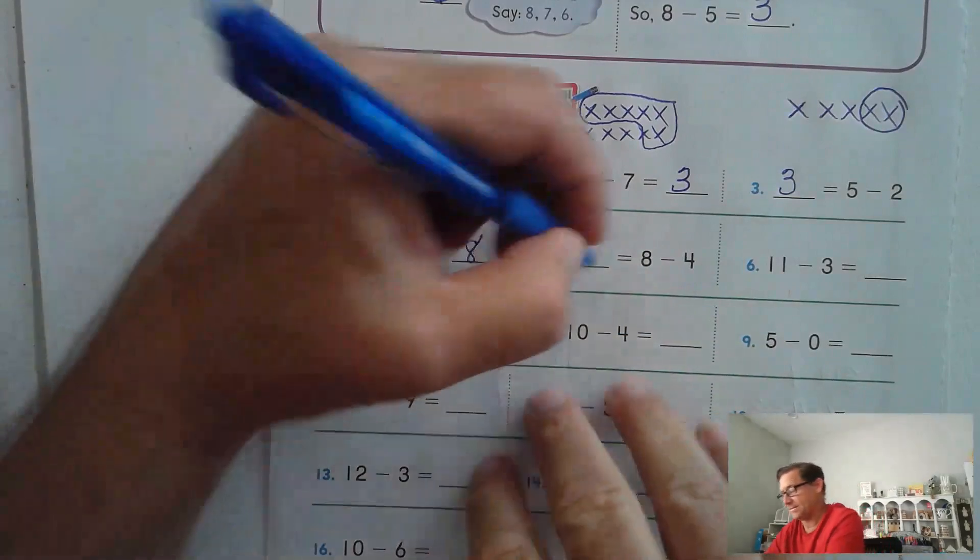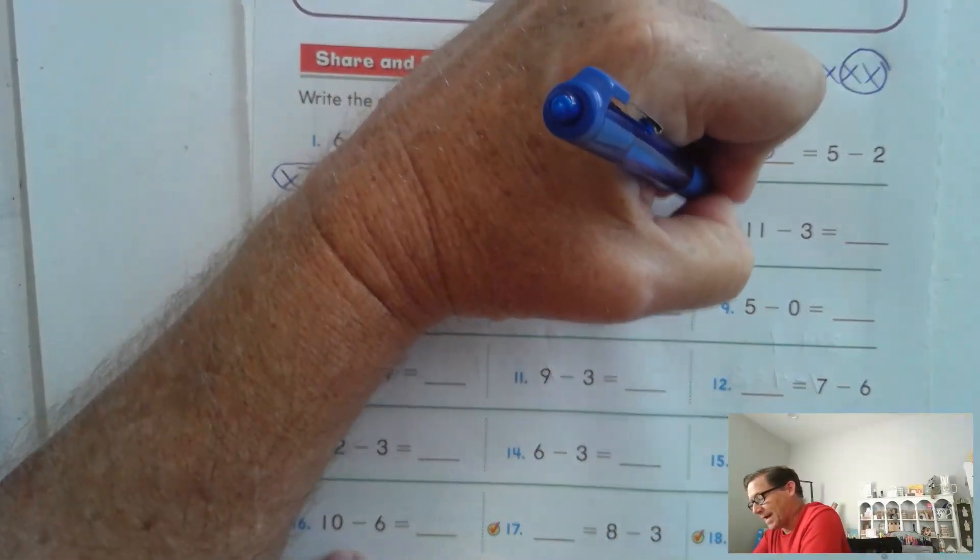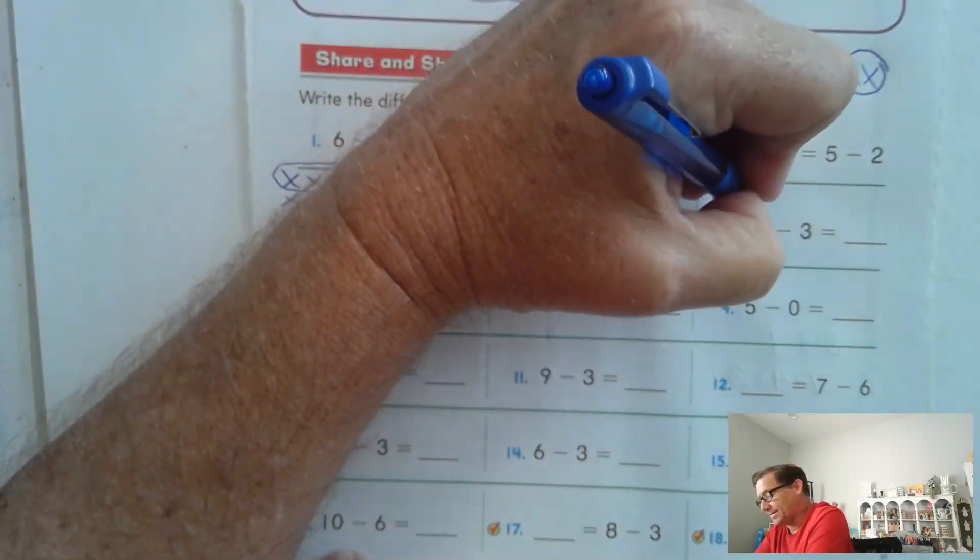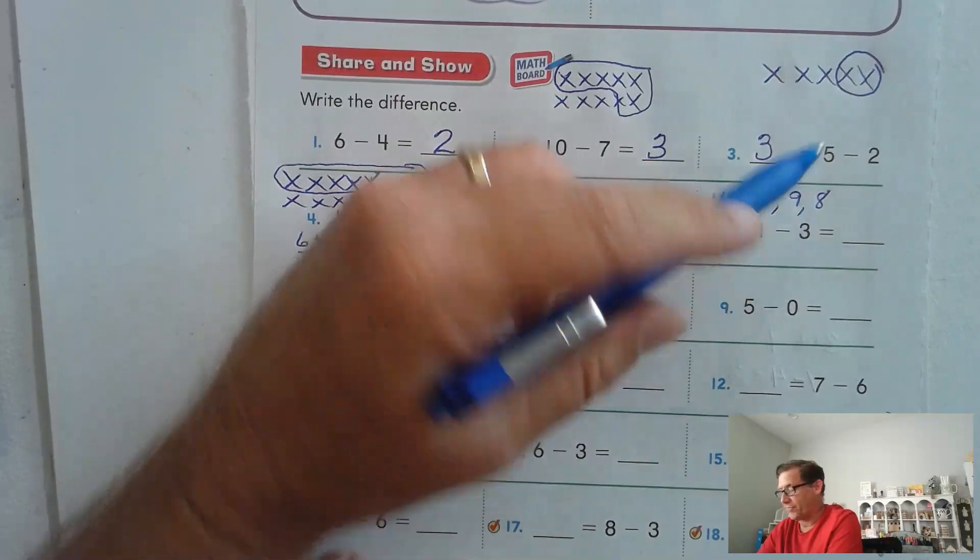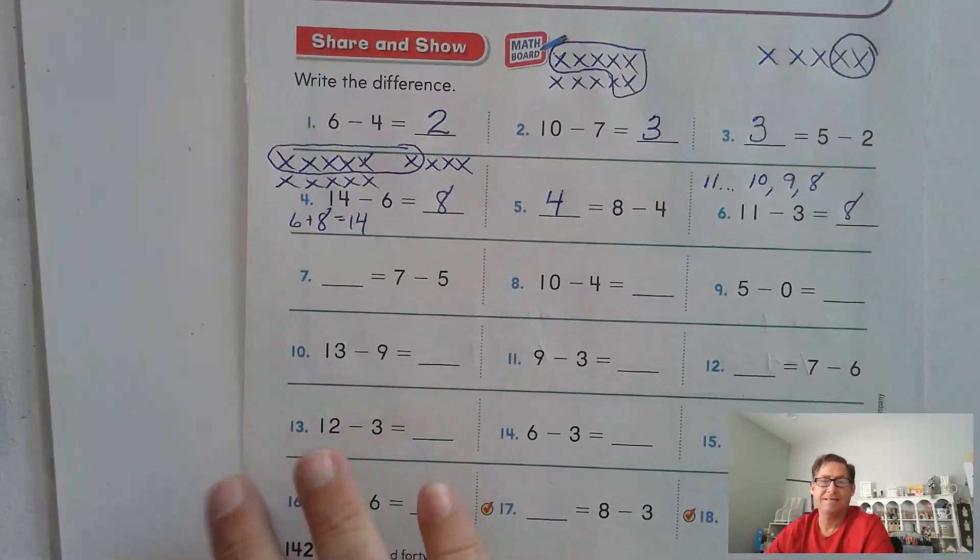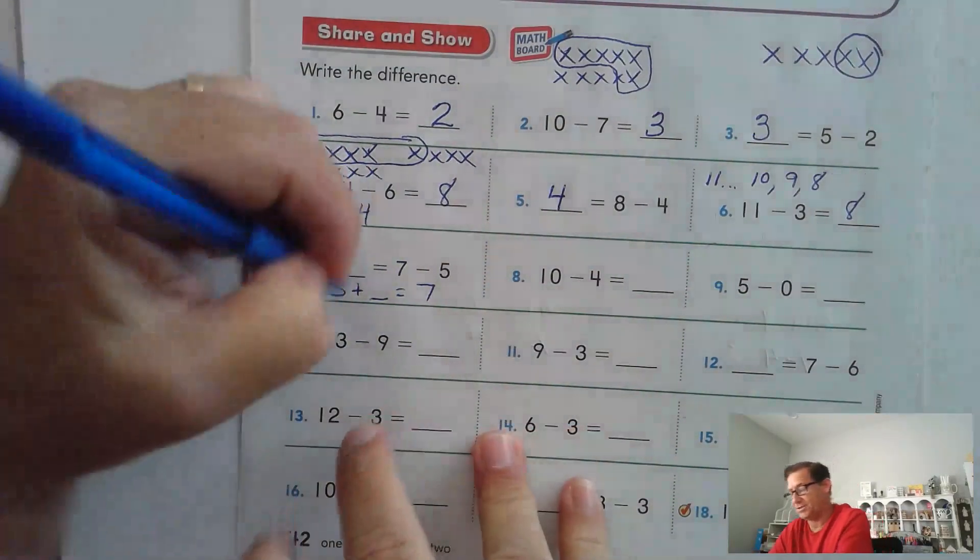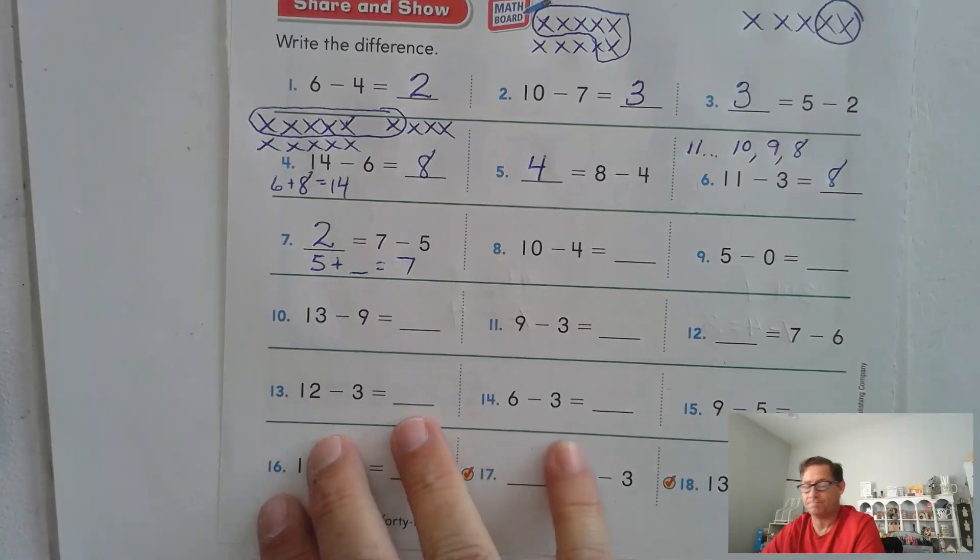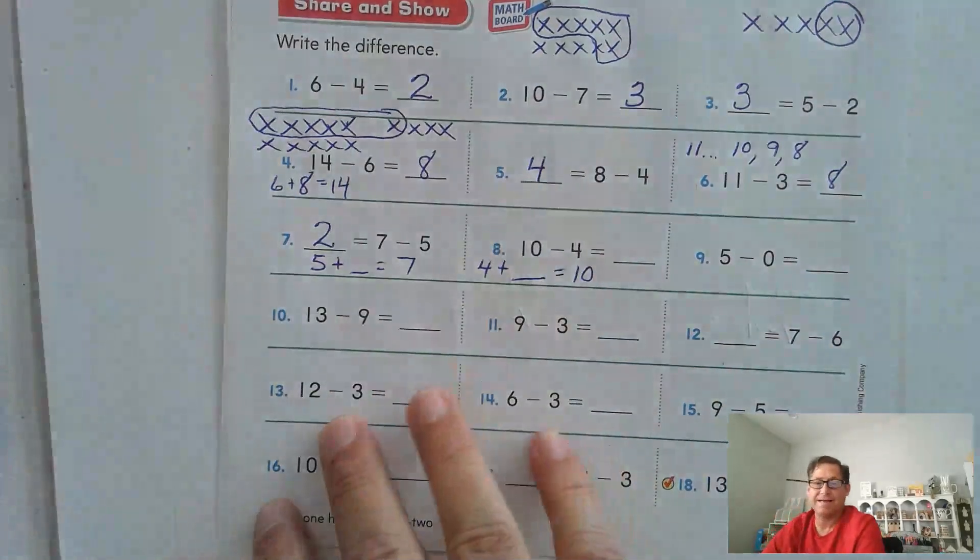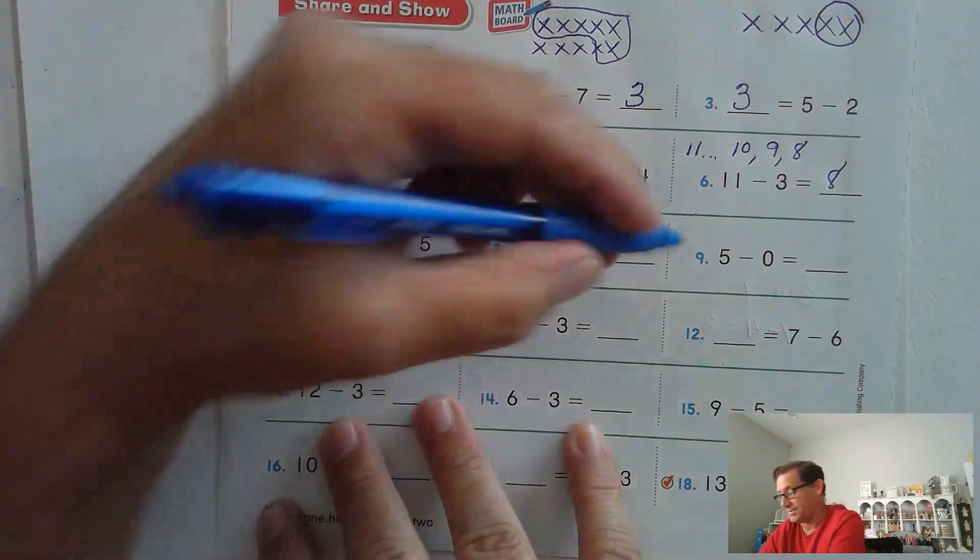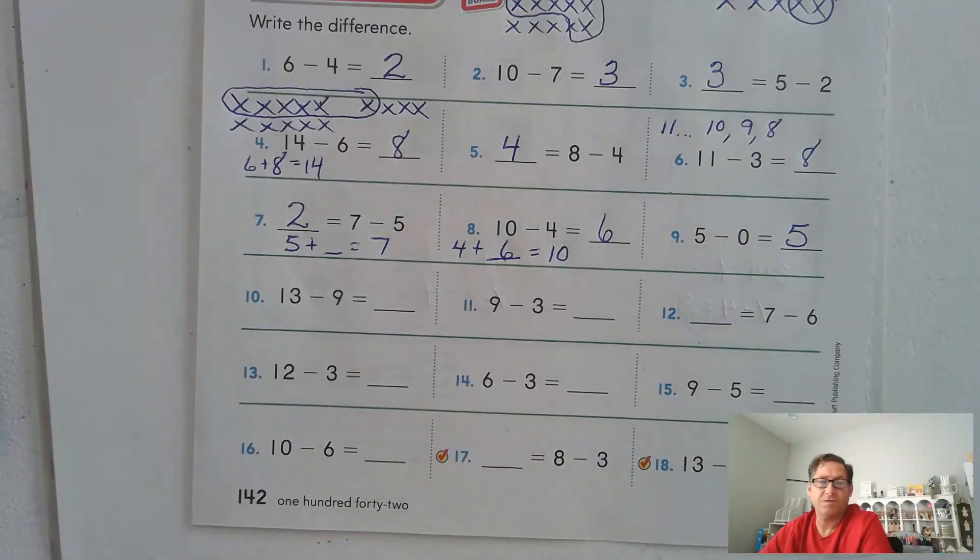8 minus 4. Well, I know 4 plus 4 is 8, so 4. 11 minus 3. I'm probably going to go backwards. So we're at 11, we need to take away 3: 10, 9, 8. So we started at 11, and I took away 3, and we have 8. 7 minus 5. 5 plus what is 7? 6, 7, 2. 10 minus 4. 4 plus what makes a 10? 4 plus 6. 5 minus 0. You're not taking anything away from 5, so 5.